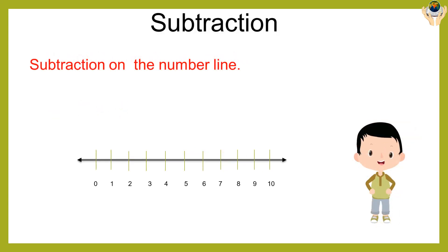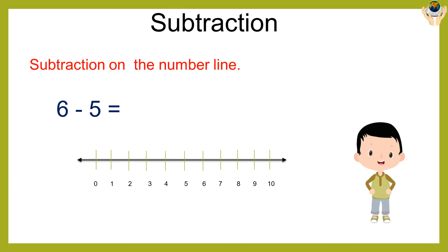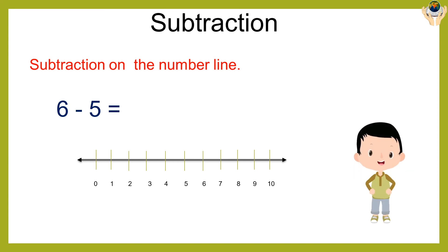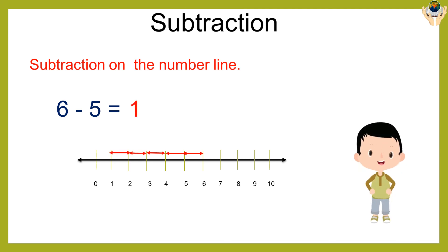Now on the number line, six minus five is equal to what? Go to the number line. The bigger number is six. From six, start backward counting five steps: five, four, three, two, one. The answer is one.